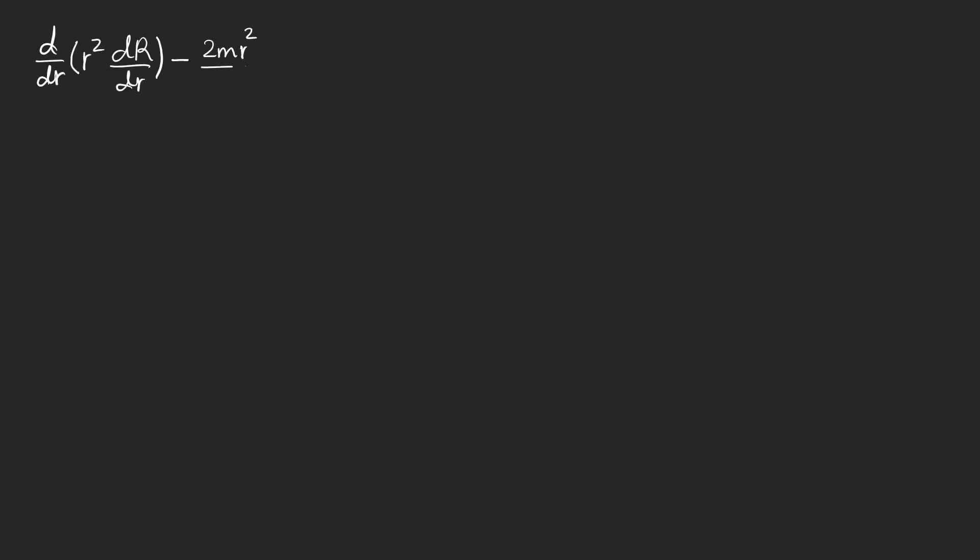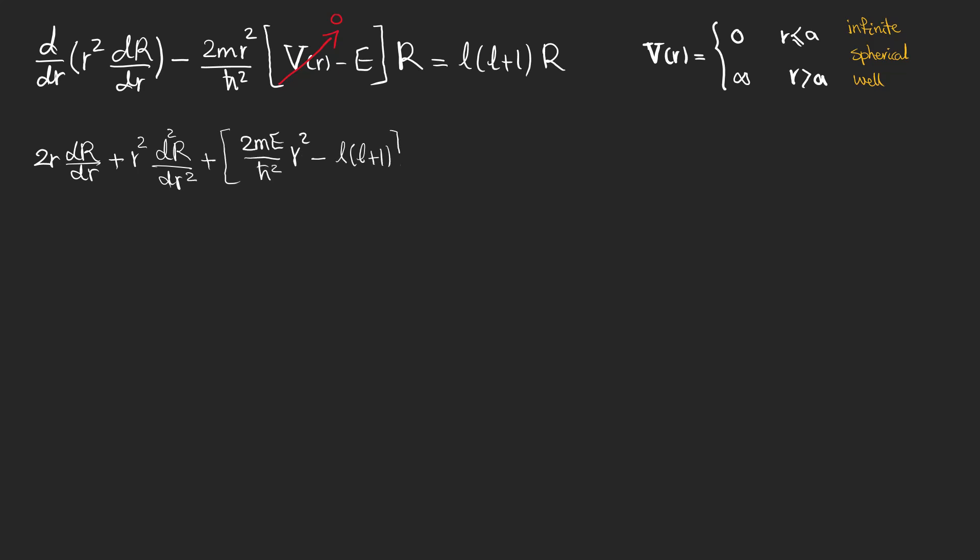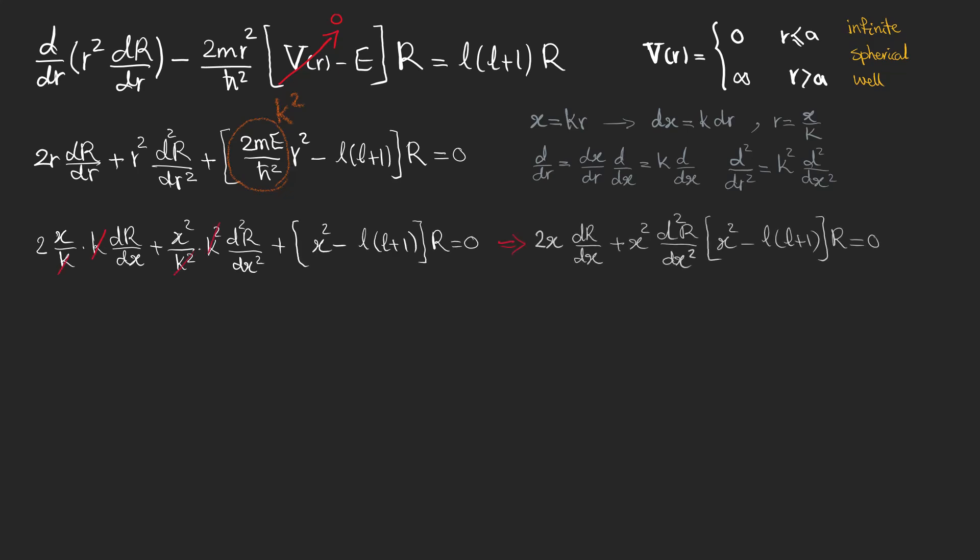To talk about non-zero Ls, we should start with this equation without changing R. We know that the potential is zero in the well. So we expand the derivative and put all the expressions on the left side of the equation. This term here is K squared. Now we set KR to be X and find R in terms of X and also its derivatives. Then we rewrite the equation in terms of X, which leads to this equation in which we have a second order derivative with coefficient X squared, a first order derivative with coefficient 2X and R itself with these parentheses as its coefficient.